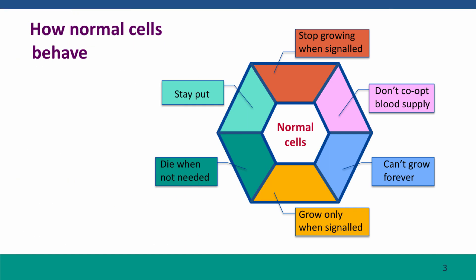Here's a diagram of how normal cells behave. They stop growing — they're very well behaved. They stop growing when they're told to. They don't steal the blood supply to get more nutrients or more oxygen than is their fair share. They can't grow forever. They only grow when they're given signals to tell them to grow. And they politely die when they're not needed. And finally, they stay put — they don't wander around the body, moving into new places.